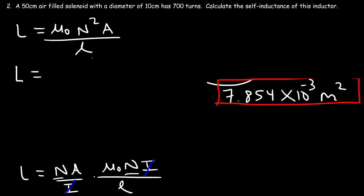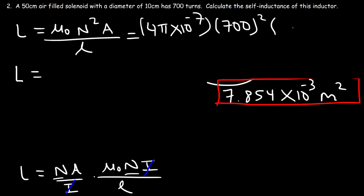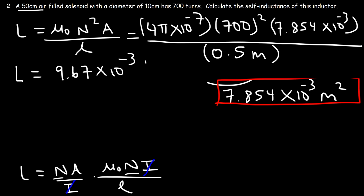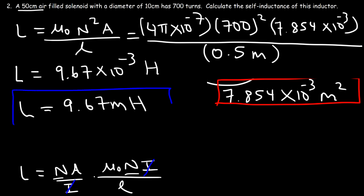Plugging in: mu-zero is 4 pi times 10 to the minus 7. Capital N is 700 turns squared. The area is 7.854 times 10 to the minus 3 square meters. The length of the solenoid is 50 centimeters, which is 0.5 meters. The result is 9.67 times 10 to the minus 3 henries, which can be reported as 9.67 millihenries.